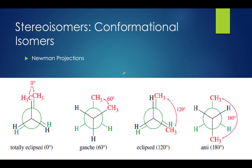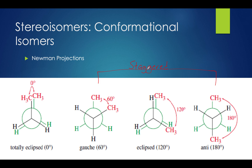There are four types of Newman projections that you should be familiar with on test day. The anti-projection has two functional groups on the same plane but they're on opposite sides — a 180 degree distance between the two groups — and it is the most energetically favorable projection of the four. Gauche projections have a 60 degree distance between their groups. Both gauche and anti-projections are called staggered projections because there is no overlap between their functional groups.